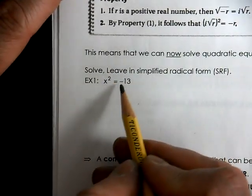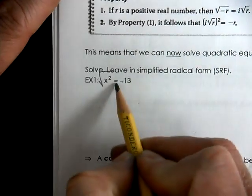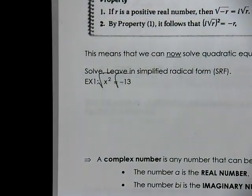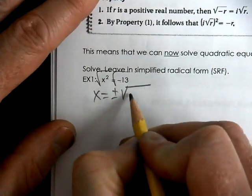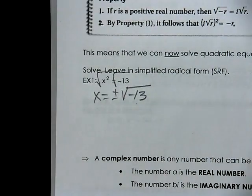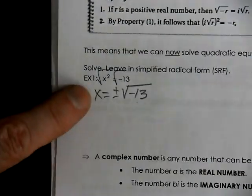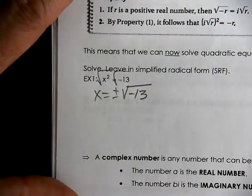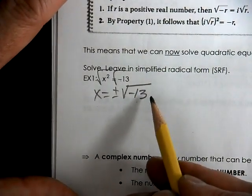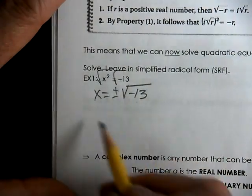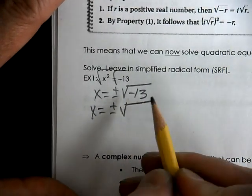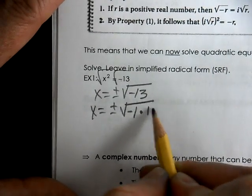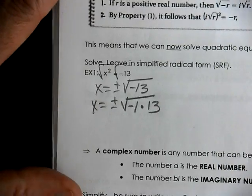We have x squared equals negative 13. We need to take the square root of both sides. So that's x equals plus or minus the square root of negative 13. You have to use plus or minus whenever you take the square root of both sides. Now we've talked about factors. We typically call 13 prime, but it has a negative, so we're going to say negative 1 times 13.